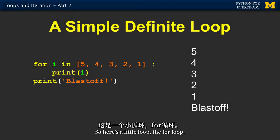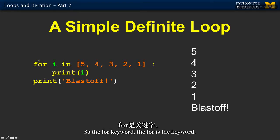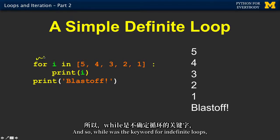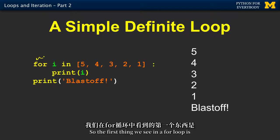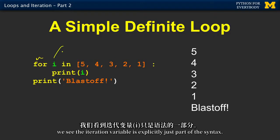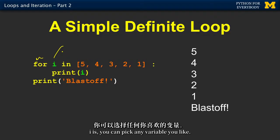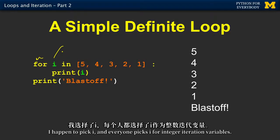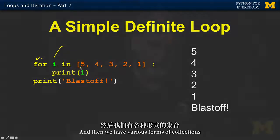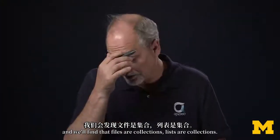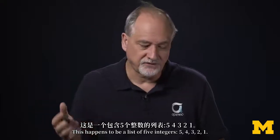So here's a little loop, the for loop. For is the keyword and while was the keyword for indefinite loops and for is the keyword for definite loops. The first thing we see in a for loop is the iteration variable is explicitly just part of the syntax. I is, you can pick any variable you like. I happen to pick I and everyone picks I for integer iteration variables. In is another Python reserved word. And then we have various forms of collections. We'll find that files are collections, lists are collections. This happens to be a list of five integers.